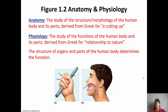Even though they are two different words and two different realms, they still go together because structure and function always go together. The structure of organs and parts of the human body determines the function. For example, our skeletons are designed so we can walk upright, whereas tigers' skeletons are designed so they cannot walk upright. While anatomy and physiology are two branches, you study them together because you can't understand structure without function, and vice versa.